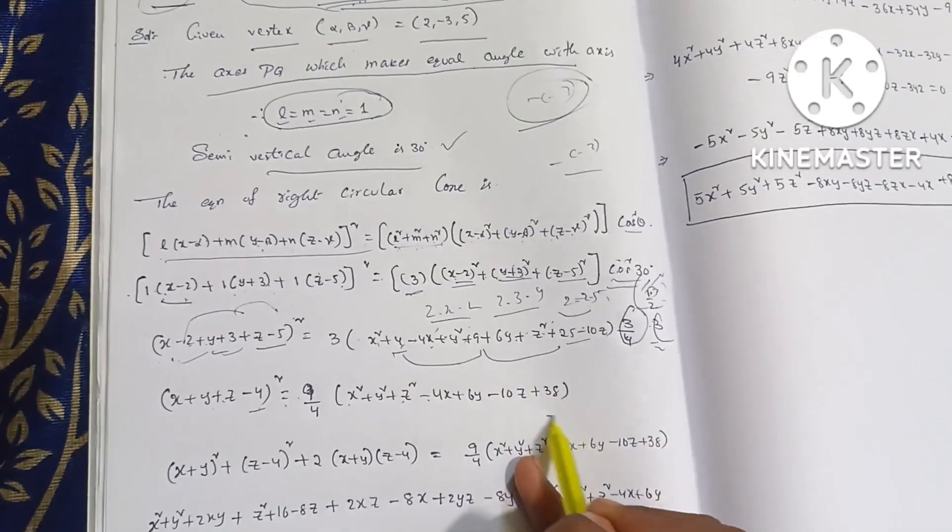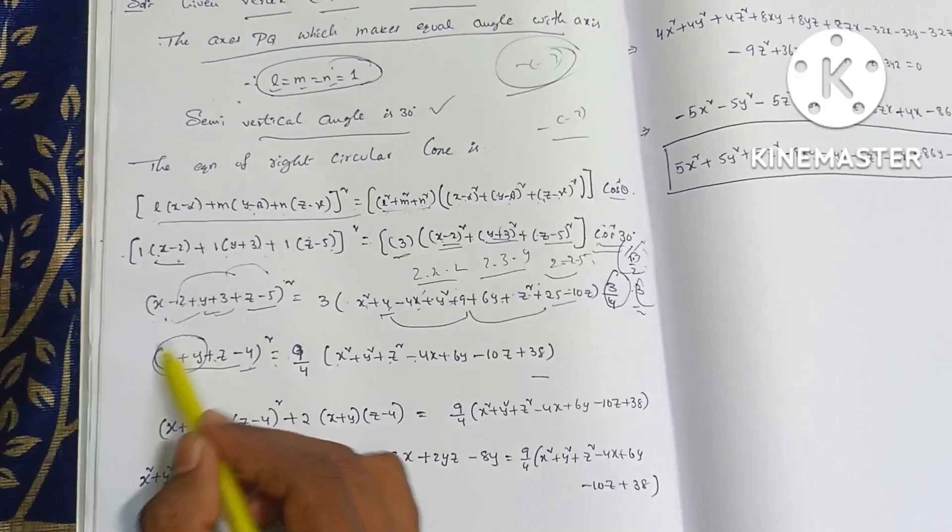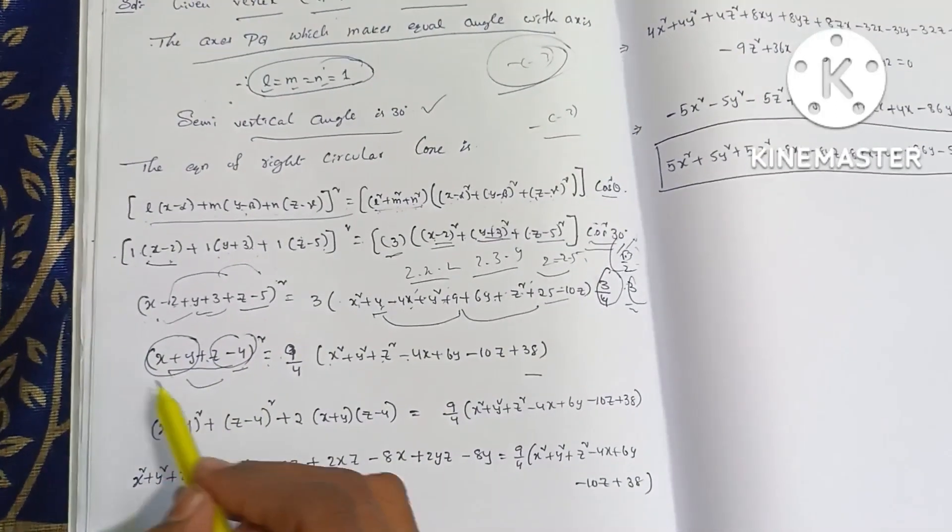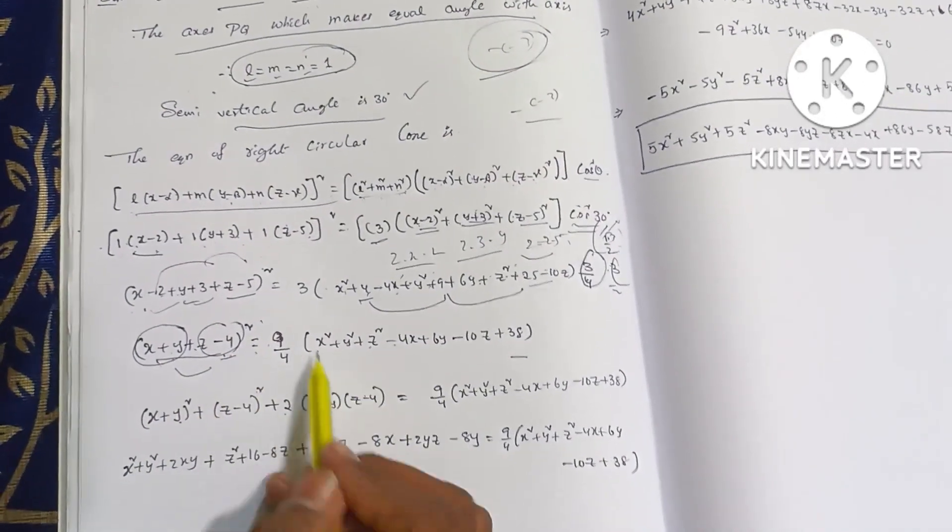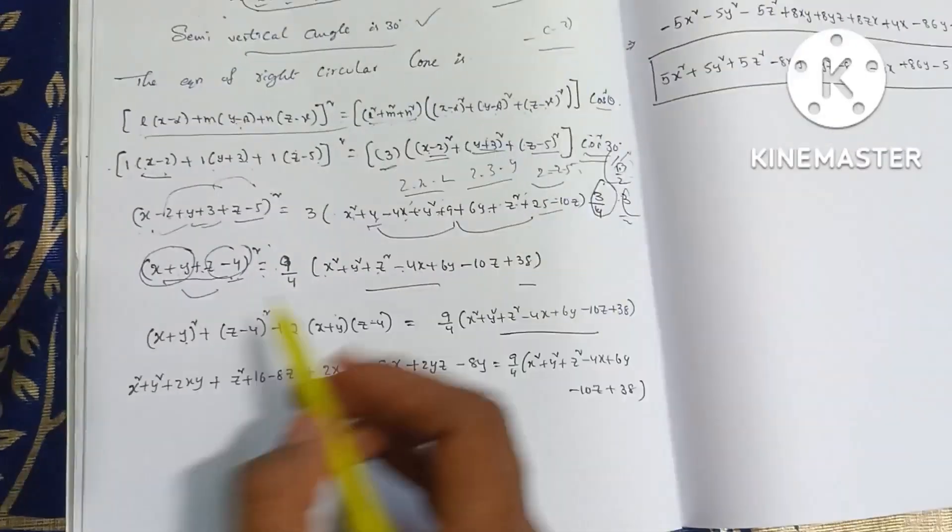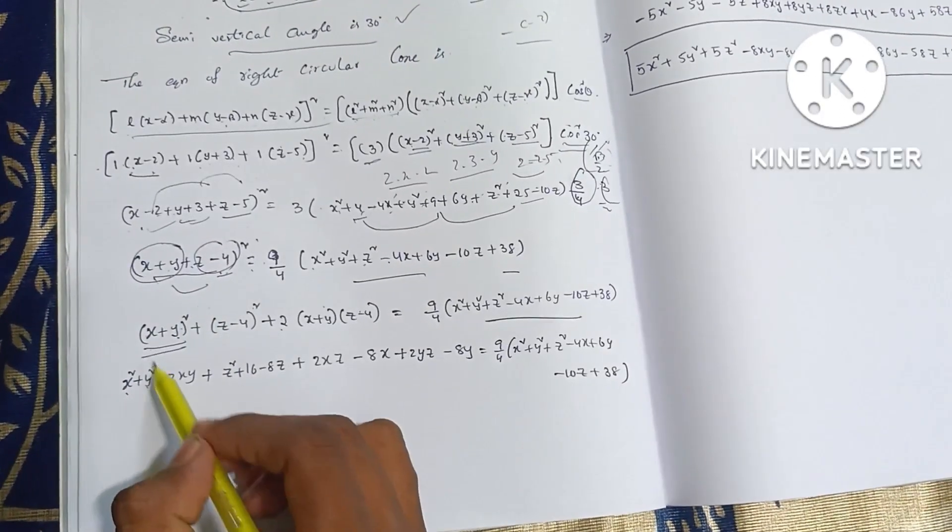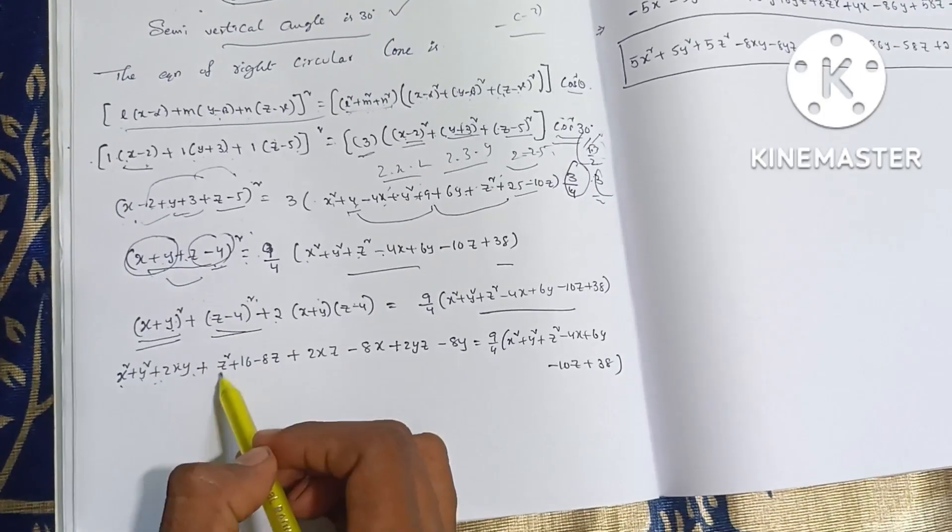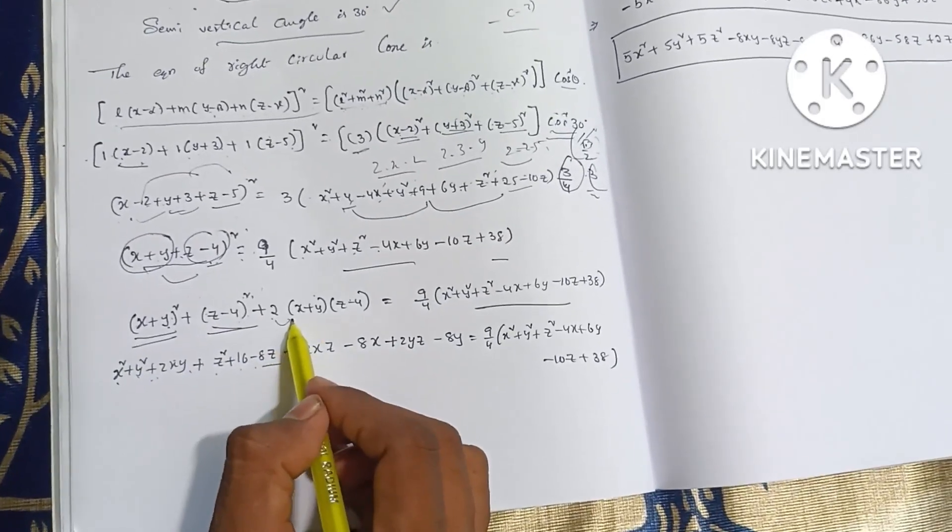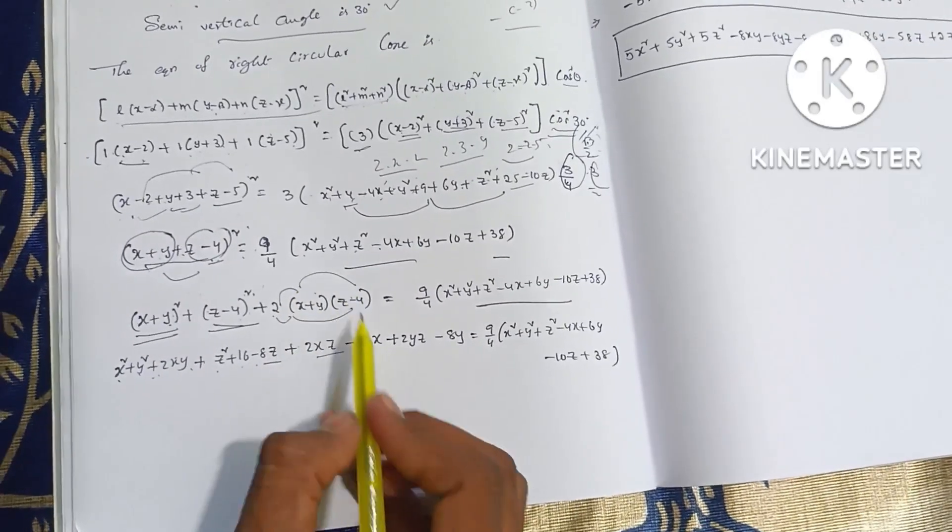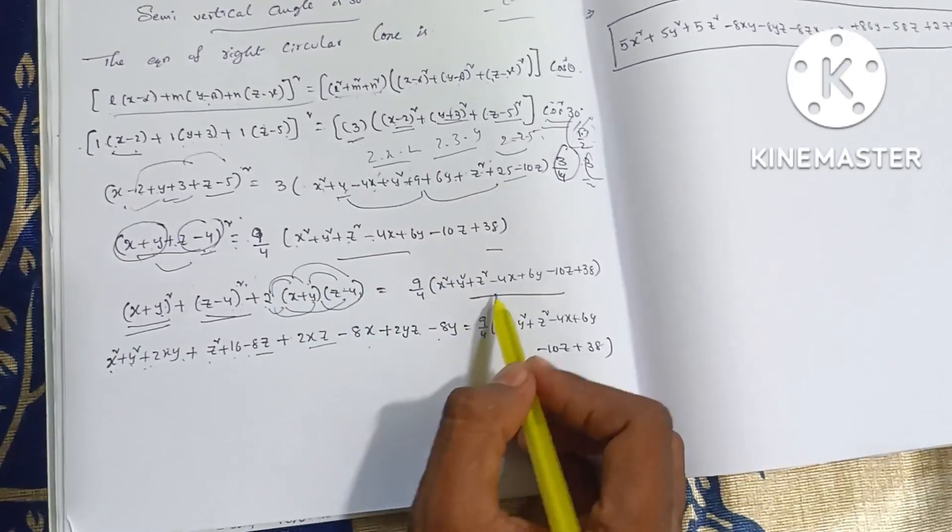Minus plus 4x plus 6y minus 10z. 4 plus 9, 13, plus 25, 38. So x plus y 2 minus 2 plus 3 and 1 1 minus 5 into minus 4 whole square. So a plus b whole square and a square into x plus y square plus b square and z minus 4 whole square plus 2 into a into b. Plus a square into x square and b square into y square plus 2 into a into b. Plus z square plus 4 square into 16 minus 2 into z into 4, 8z. Plus 2 into x into z, 2xz, 2 into x into minus 4, minus 8x. 2 into y into minus 4, minus 8y. 2 into y into z, 2yz.